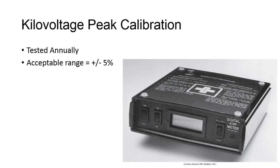HVL results are valuable in the process of kilovoltage peak calibration, and there are different methods for testing for KVP consistency. One of the simplest ways is with a digital KVP meter, where a series of test exposures are taken with the beam centered to the meter, and the digital readout of the KVP produced by the beam is displayed. There is a plus or minus 5% range in the state of California, but federally the acceptance range is plus or minus 10%, and this should also be tested annually.